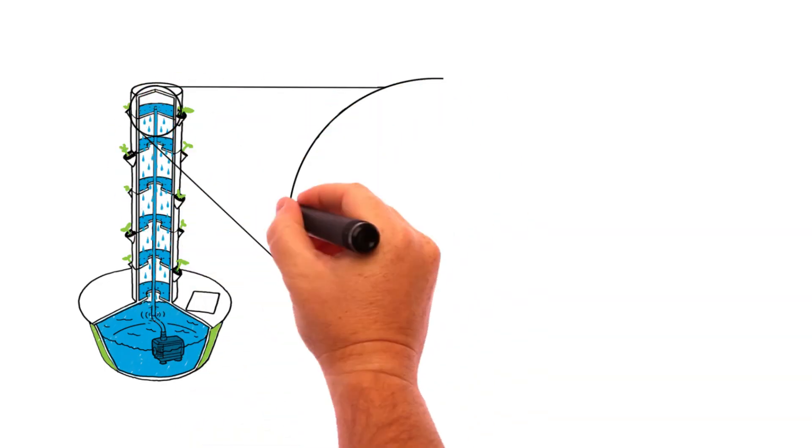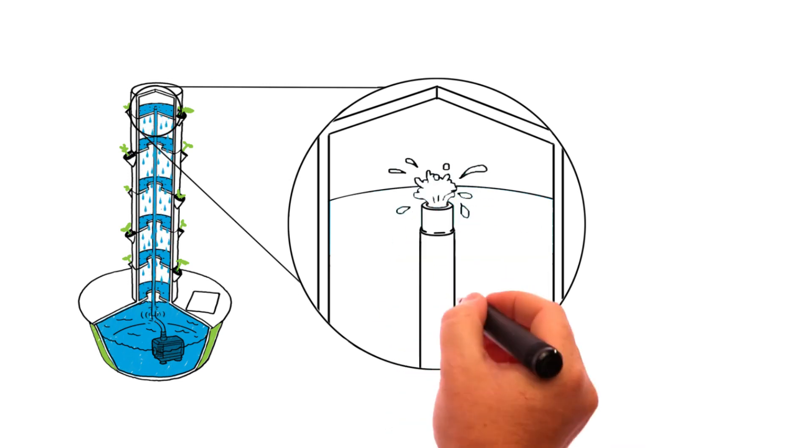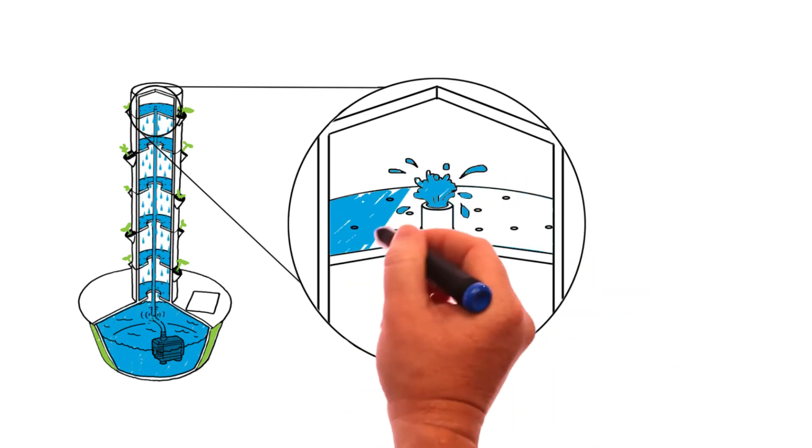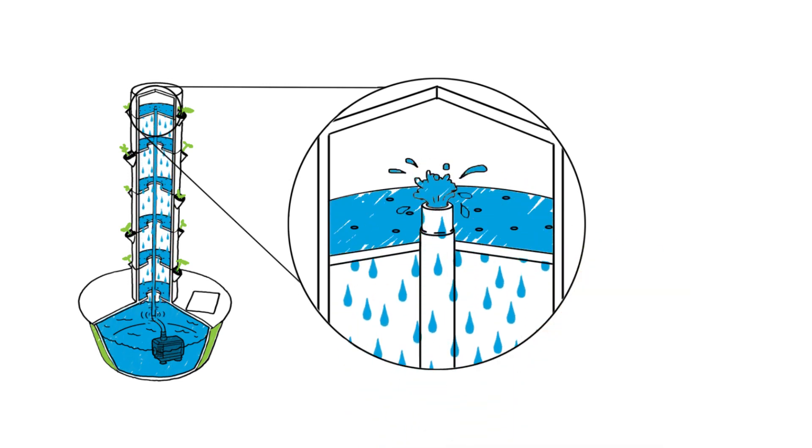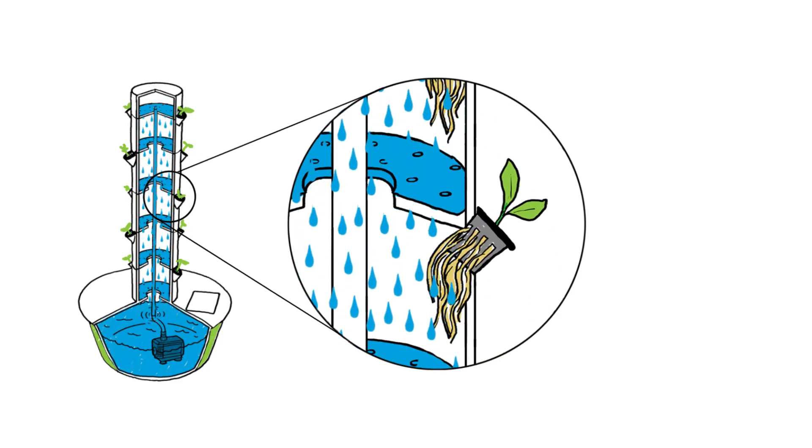On the journey down the tower, the nutrient solution feeds the roots and becomes highly oxygenated as it cascades gently down to the reservoir. This process is continuous, providing fresh oxygen, water, and nutrients to the roots of the plants.